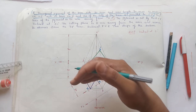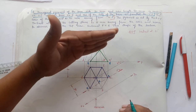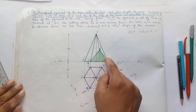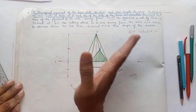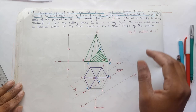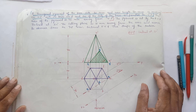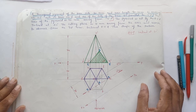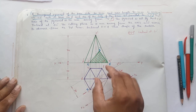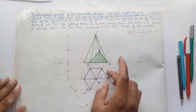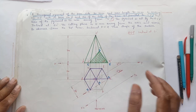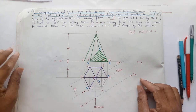Draw hatching lines in the section inclined at an angle of 45 degrees to the XY line. After drawing the section in the front view, it is now time to draw the true shape of the section. Make sure that the part of the pyramid which is going to be removed is shown as a light outline, and the part which will remain is shown as a visible outline.